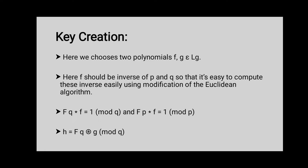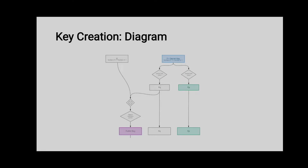For most appropriate choices of F, there should be an inverse of F modulo Q and modulo P, and it is very easy to compute this inverse using a modification of the Euclidean algorithm. Suppose FP and FQ are inverses — the formulas for FP and FQ are shown in the slides. Then Alice computes the quantity H, where H is the public key for Alice and F is the private key for Alice. The diagram of key creation is shown in the next slide.